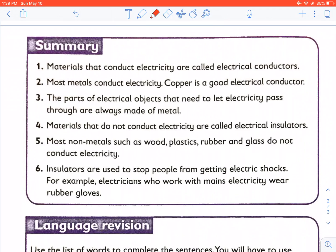Materials that conduct electricity are called electrical conductors. Most metals conduct electricity. Copper is a good electrical conductor. The parts of electrical objects that need to let electricity pass through are always made of metal.